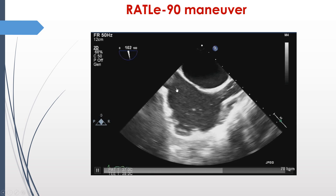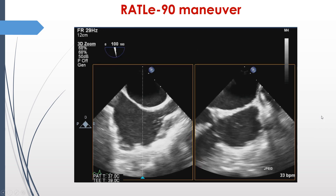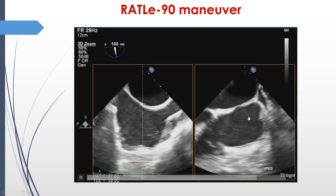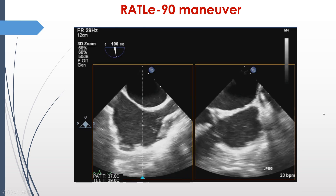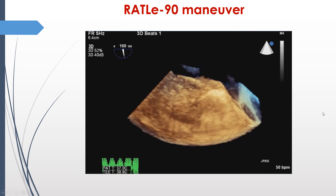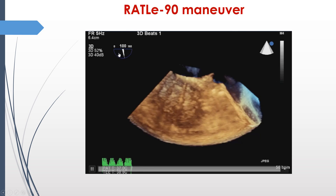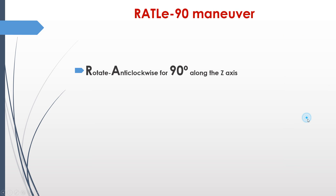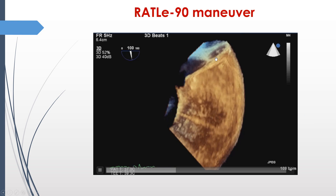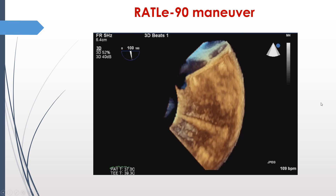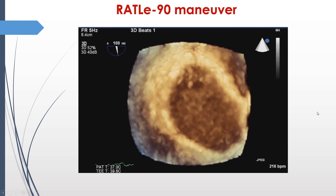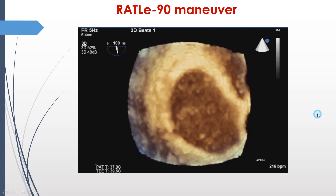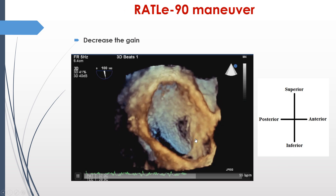We will see that in motion now, starting from the bicaval view. Once you activate the 3D zoom, the screen will be divided. Optimize your boxes to the ostia of the vena cava, include the whole septum in depth, and then acquire again. This is one-beat acquisition — that means this is live mode. The superior vena cava opening will be to the right as the reference image, then rotate anti-clockwise to bring the superior vena cava opening superiorly, and then tilt-left for 90 degrees. You will face the interatrial septum, but this brown color is the blood only.